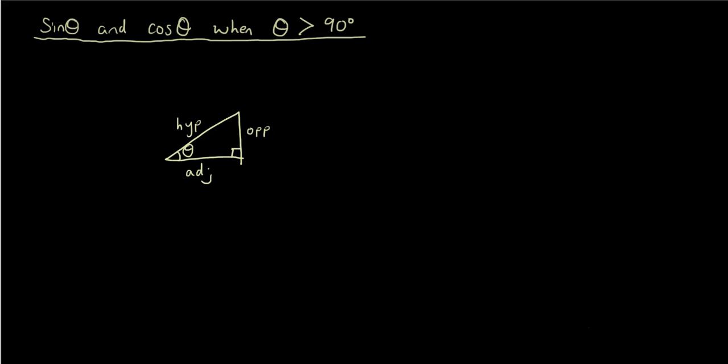And if you remember our basic trigonometry definitions, sine theta equals opposite over hypotenuse, cosine theta equals adjacent over hypotenuse, and tan theta equals opposite over adjacent.